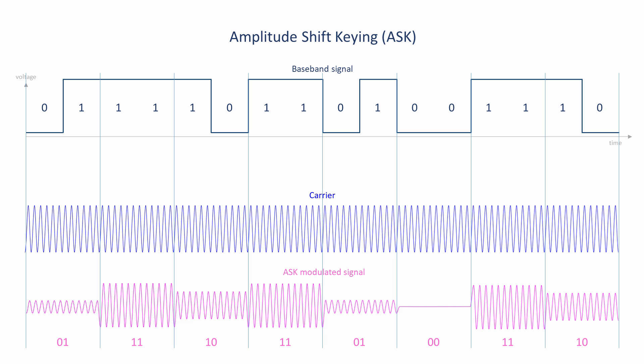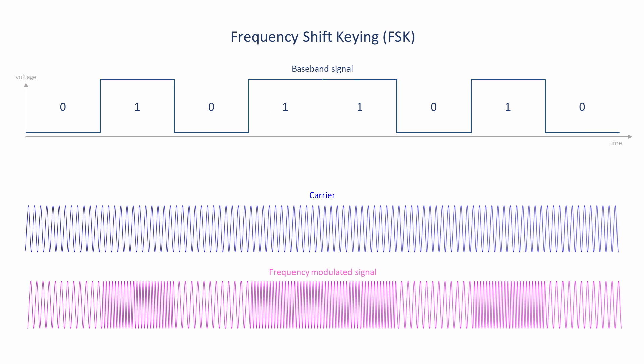An alternative way to communicate digital data via radio is with frequency shift keying, or FSK. As with amplitude shift keying, a continuous wave carrier is generated and modified according to the digital signal. But with frequency shift keying,